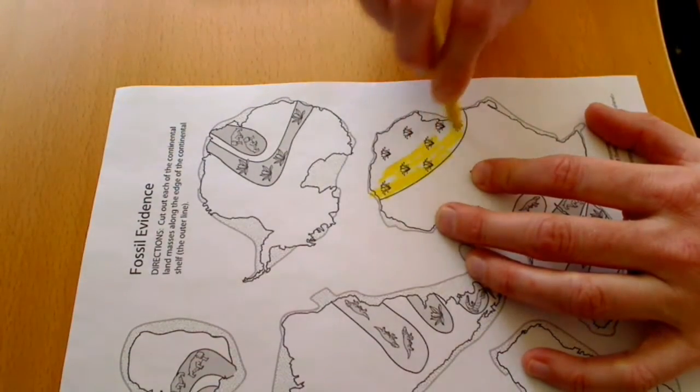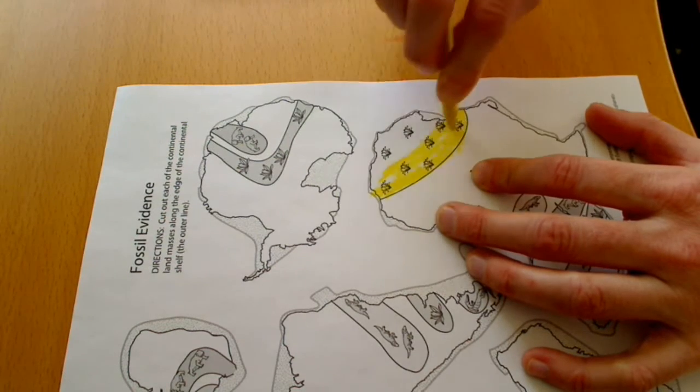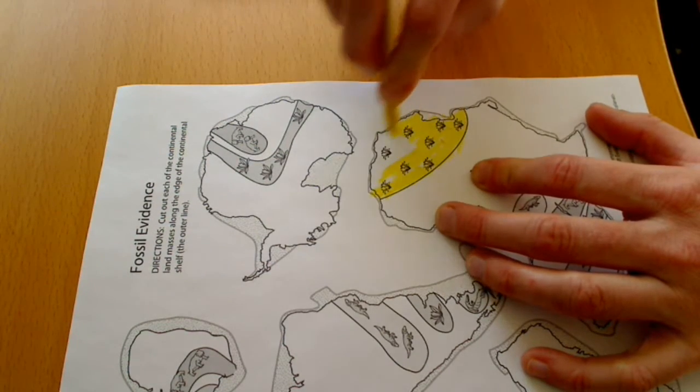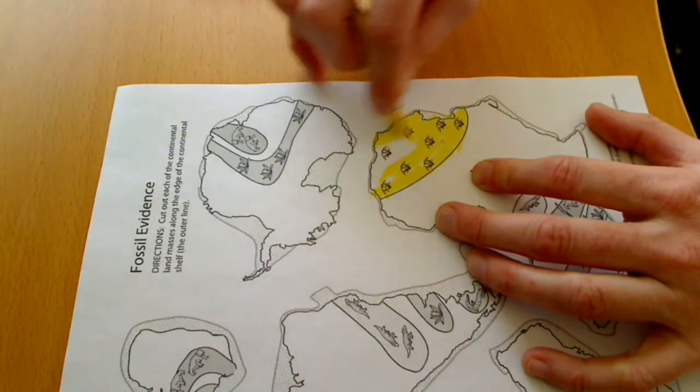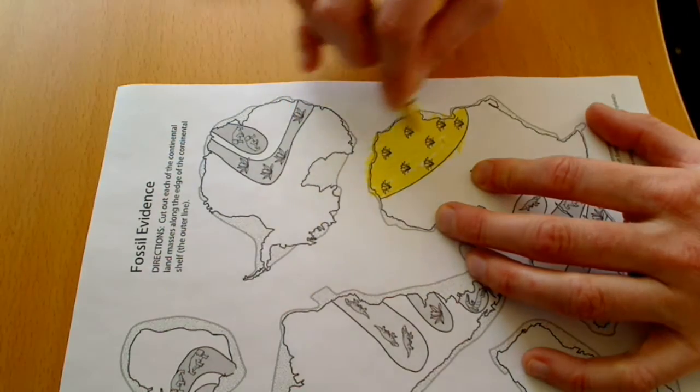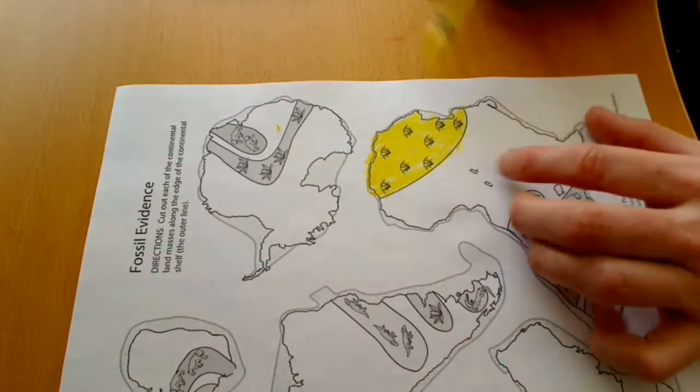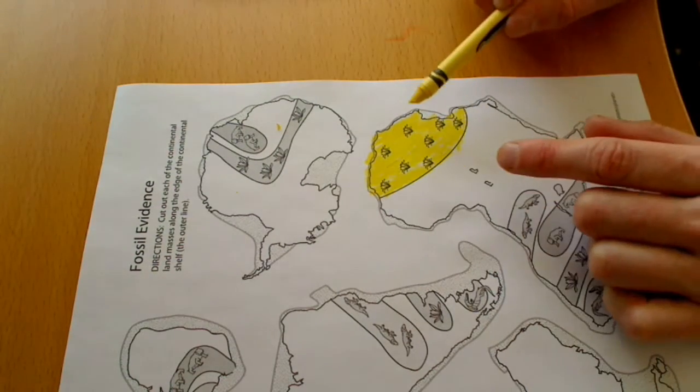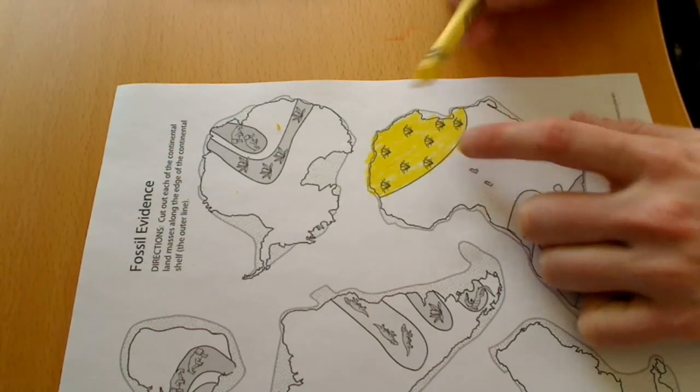So these kind of weird planty, marshy things, 300 million years ago, were found in both northern Africa and in Europe. And so that's where, and then the northern kind of Laurasia. So they said, hmm, that's very odd that these plants would be on both places.